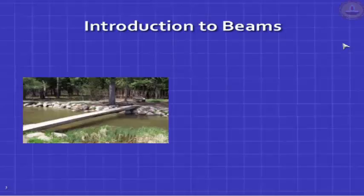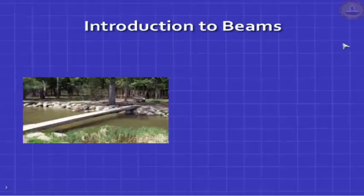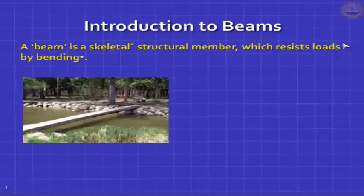Probably the earliest beam man came across was when he had to cross a stream and a fallen log of wood was there — he stepped over it and crossed. Primitive. Today we call that a bridge. When you walk across it, it will bend. So the simplest definition of a beam is a structural element that resists loads by bending. A beam is a skeletal structural member which resists loads by bending. What is the meaning of skeletal?